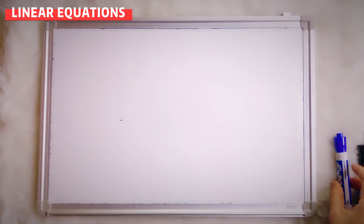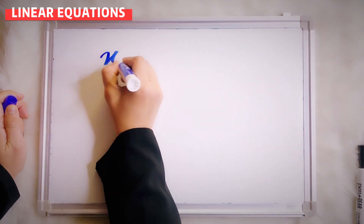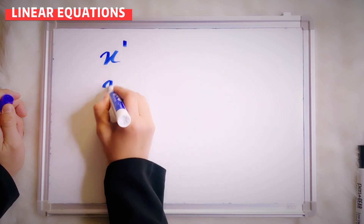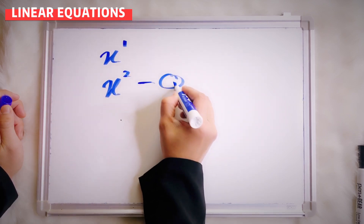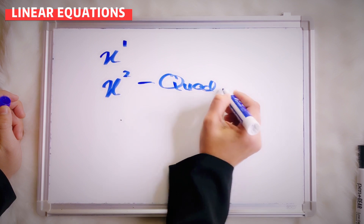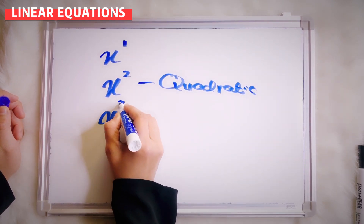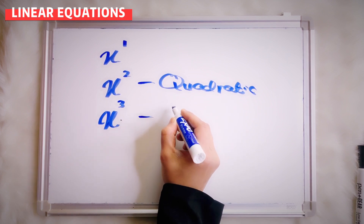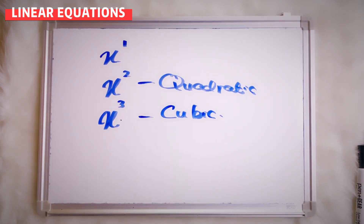It is called linear because your x power is only 1. If x has a power of 2, that means we call it quadratic. So if your x has a power of 3, that means it is cubic.